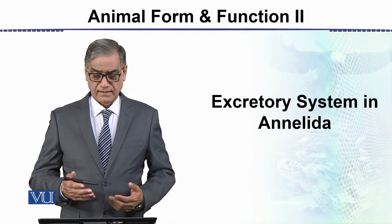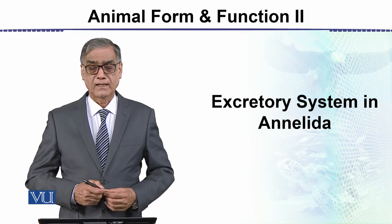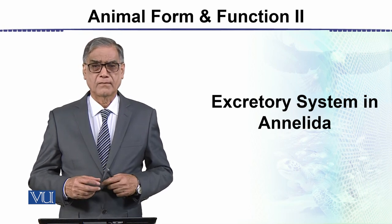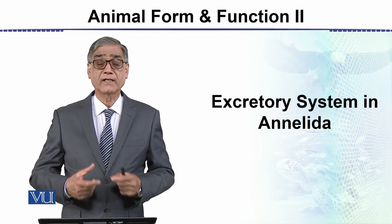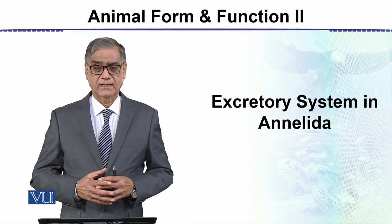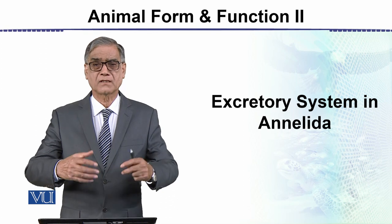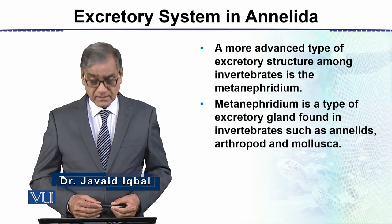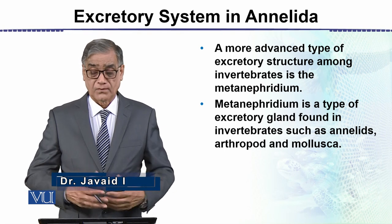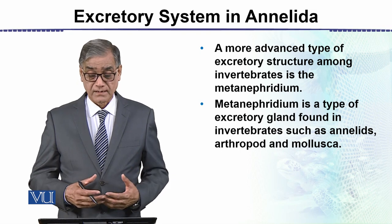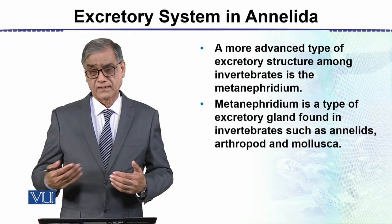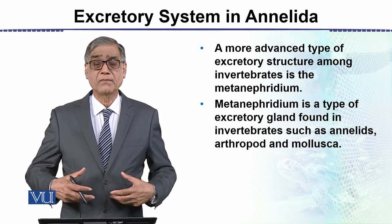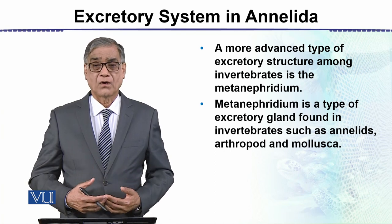This is another topic: the excretory system in Annelida. Annelida is a group of invertebrates — animals with annular rings — and these are metameric segmented animals. This is a more advanced type of excretory structure among invertebrates. The metanephridium follows the proto-nephridium, which we covered in the previous module with flame cells. This represents evolution from simple to complex and more efficient structures.